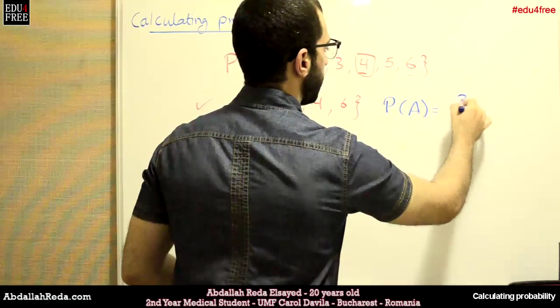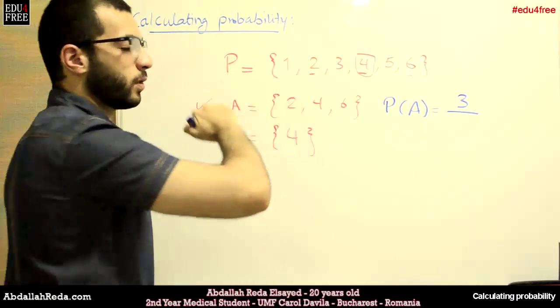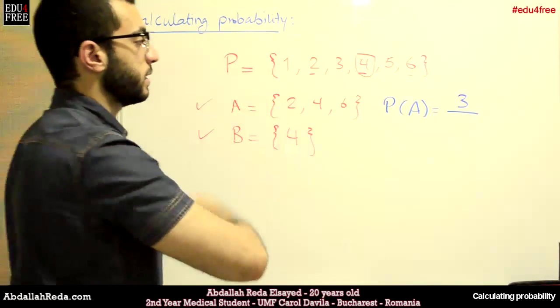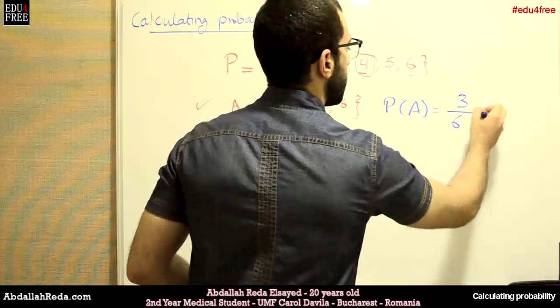So we have 3 here. And then we divide it by the total number of probabilities in the sample set. So 3 divided by 6 is half.